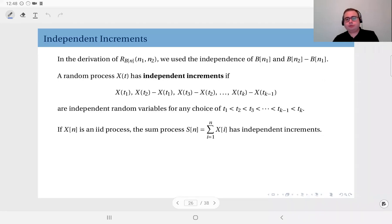Now, the trick we used in the derivation of the autocorrelation of the binomial counting process is quite useful and essentially we call that independent increments. We used the independence of p of n1 and p of n2 minus p of n1.